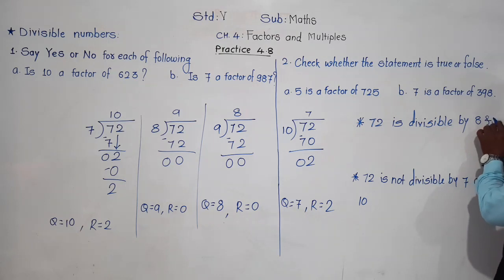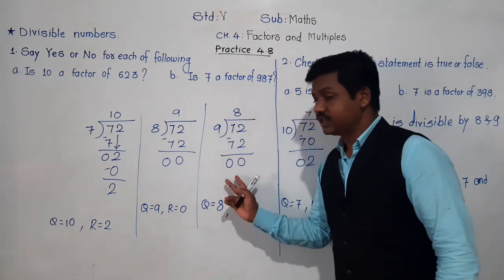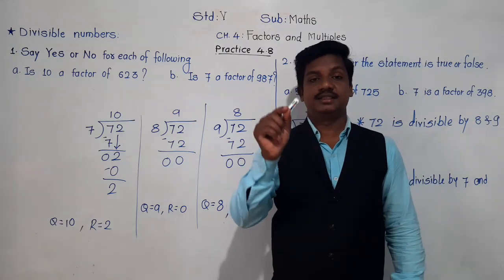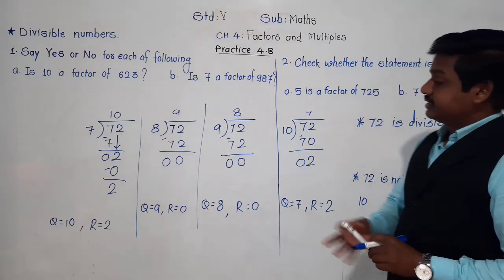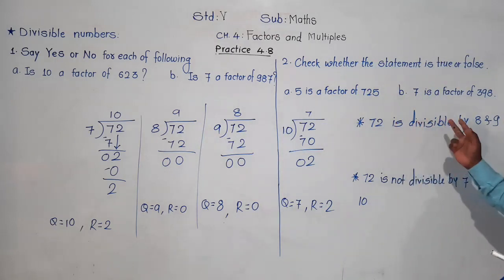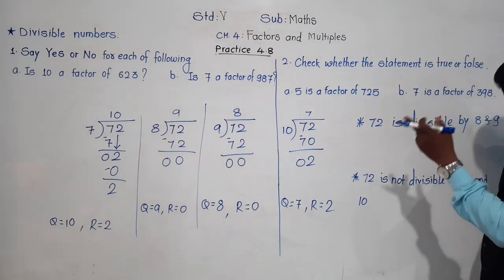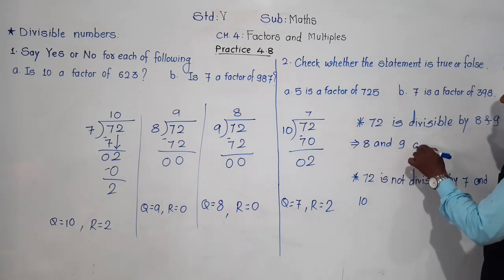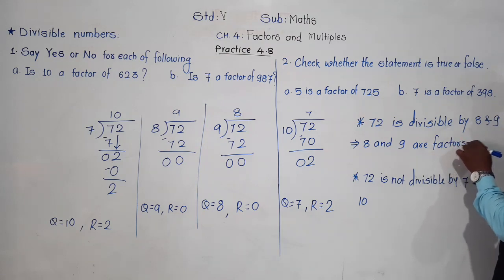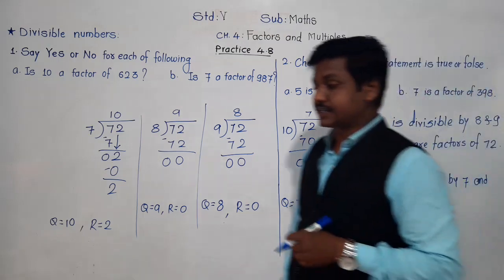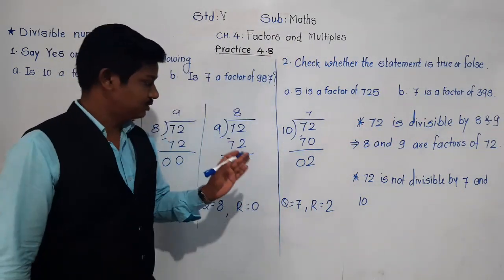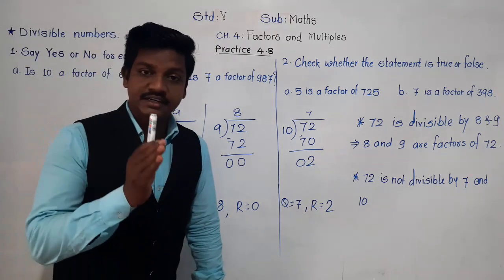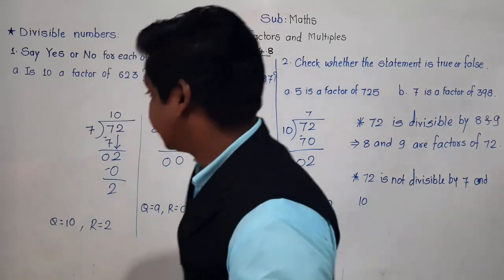Whereas 72 is divisible by 8 and 9. So 72 is exactly divisible by 9 as well. Now, since 72 is divisible by 8 and 9, that gives us another statement: 8 and 9 are factors of 72. We have seen the concept of factors — if 72 is divisible by 8 and 9, that means 8 and 9 are factors of 72.